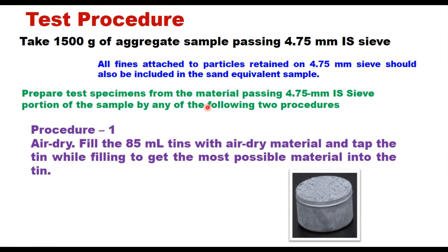The procedure can be explained in four or five steps. The first step is to take 1500 g of aggregate sample passing a 4.75 mm sieve, breaking down any lumps to pass the sieve. All fines attached to particles retained on the 4.75 mm sieve should also be included in the sand equivalent sample.